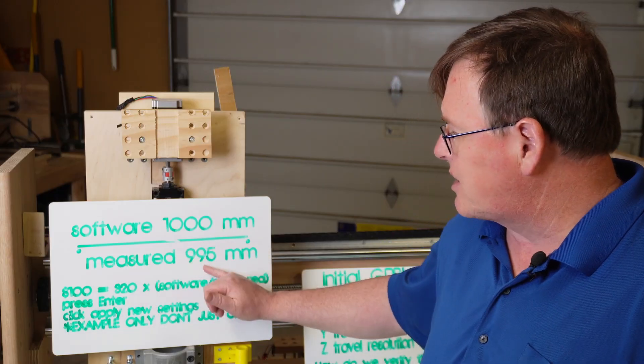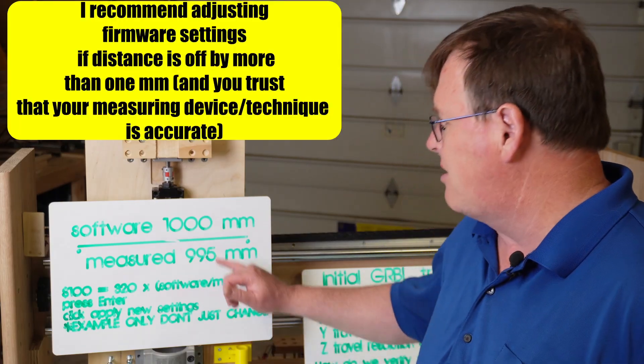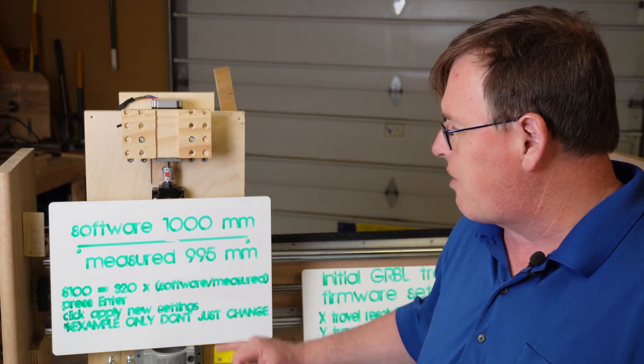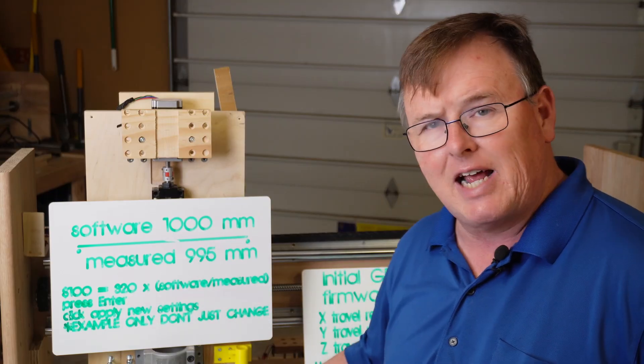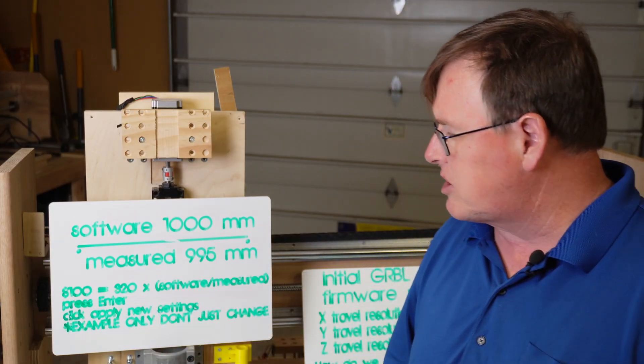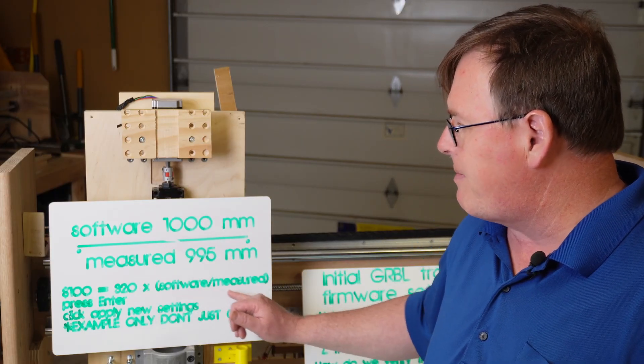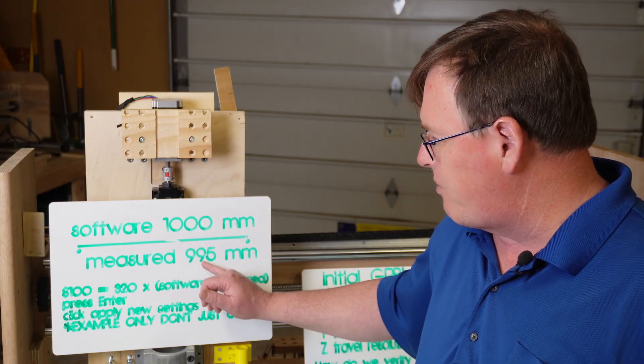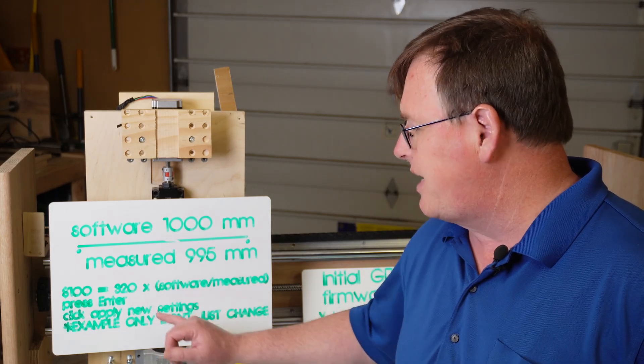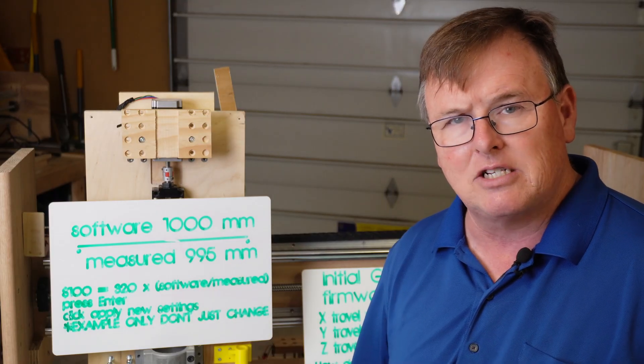But let's say when you actually measured it, when you went over that long distance, suddenly your CNC only moved 995 millimeters, but your software said it should have moved 1000. That means that we were short steps on our software. How do we fix the 320 so that we move the right distance? The answer is we're going to set up a ratio. We're going to take whatever that particular axis is. This is for the X. So I used $100 and I'm going to take the value that we were using when we did this little shift, 320, and I'm going to multiply by the ratio of whatever the software said we moved compared to what we physically measured when we moved. You're going to get an answer. You're going to put it into that, type it into your $100, you're going to press enter and make sure you hit apply new settings.